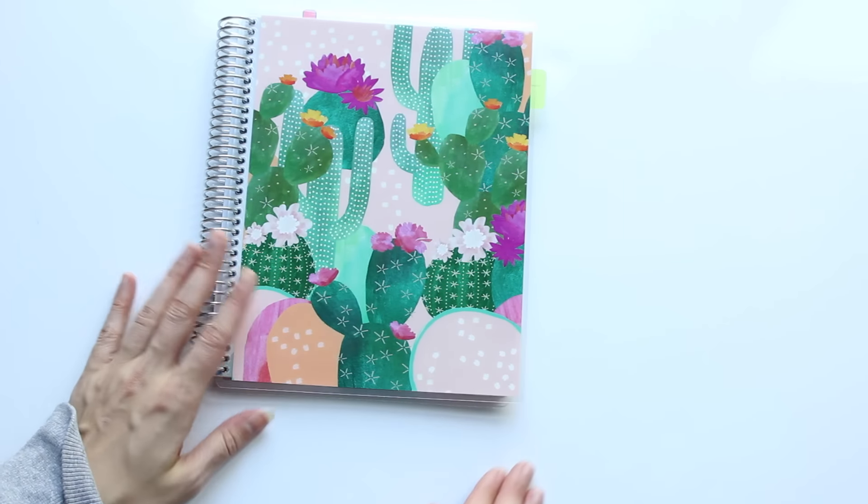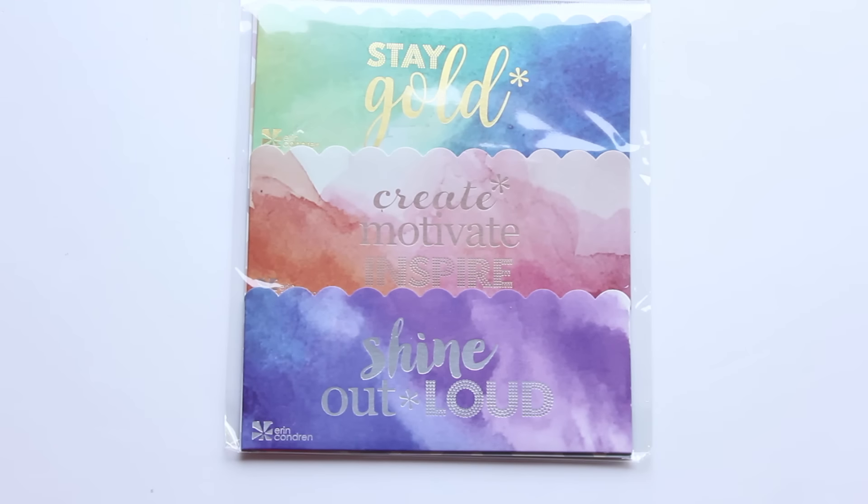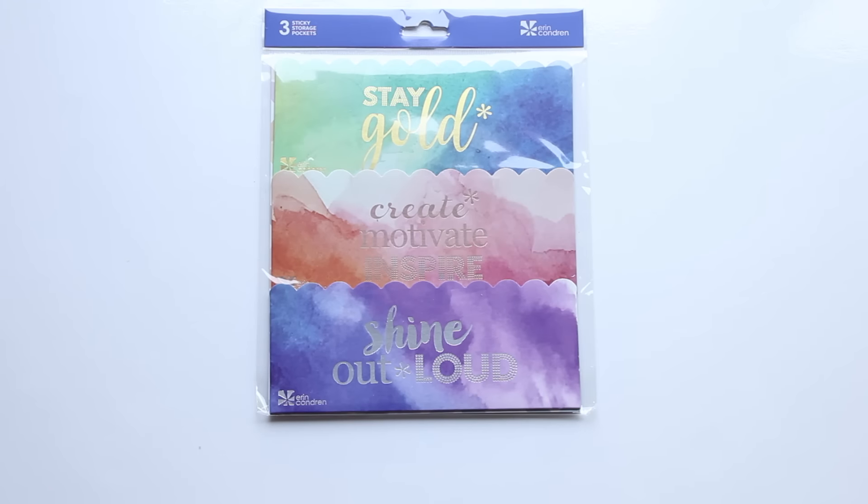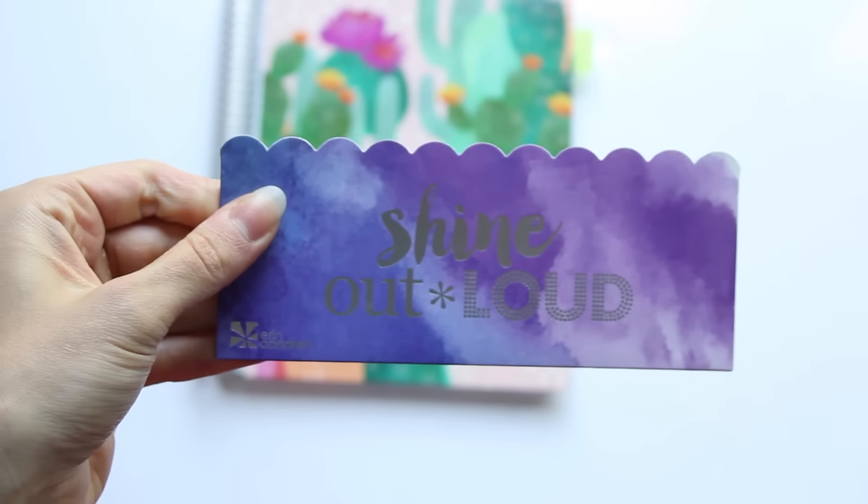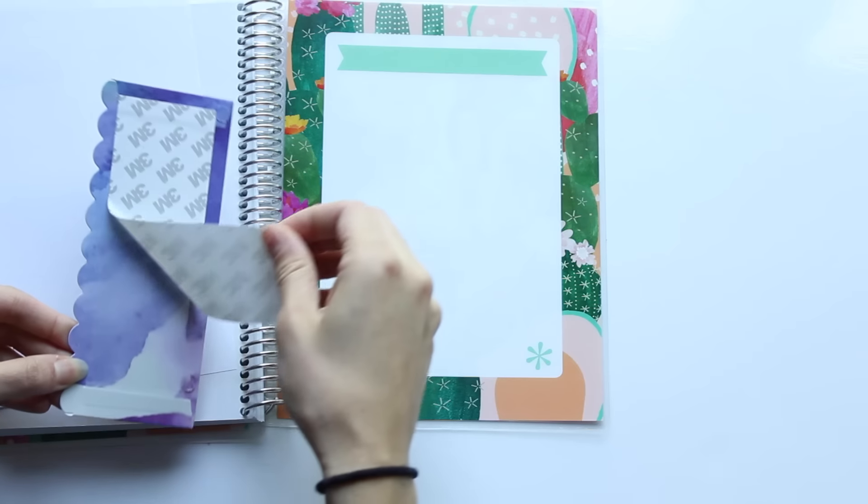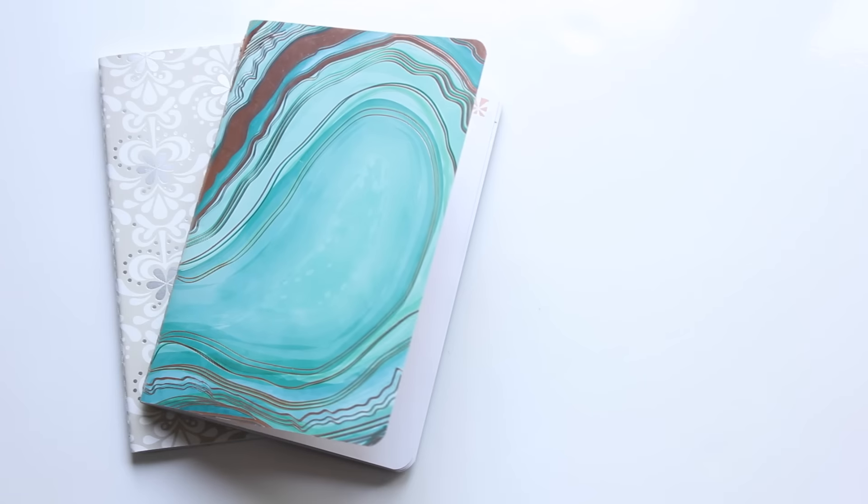Also these Erin Condren sticky pockets are perfect for keeping loose papers in your journal or notebook. They have a 3M and you can stick them on the pages or right in the back. Super convenient and you get a pack of three.